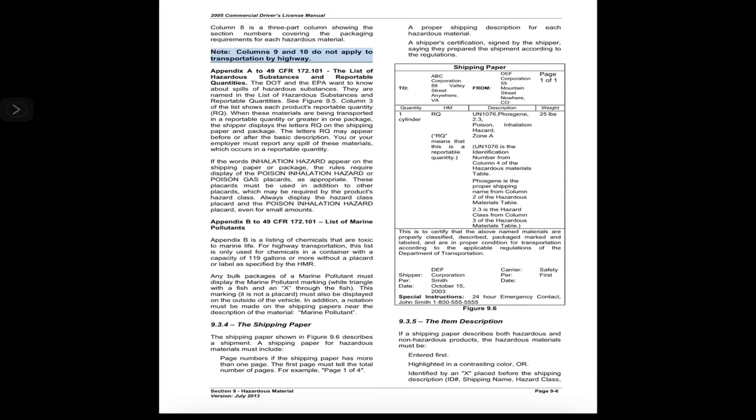Column 8 is a three-part column showing the section numbers covering the packaging requirements for each hazardous material. Note: columns 9 and 10 do not apply to transportation by highway. Appendix A to 49 CFR 172.101 is the List of Hazardous Substances and Reportable Quantities. The DOT and EPA want to know about spills of hazardous substances named in this list.